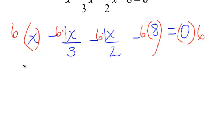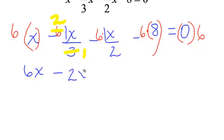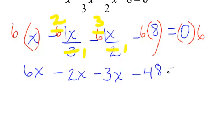Let's do a little math. 6 times x is 6x. We have some canceling to do: 3 and 6 will cancel, giving negative 2 times x, which is negative 2x. Then 6 and 2 will cancel, giving 3 times x, which is 3x — don't forget the negative, so minus 3x. Nothing cancels on the 8, so 6 times 8. Remember, if you multiply everything by 6, you must multiply everything by 6 — do not leave anything off. And 0 times 6 is 0. Look how easy that problem is now!